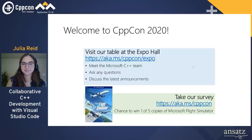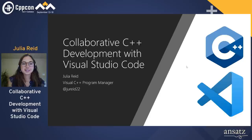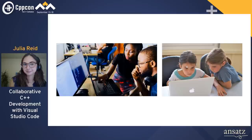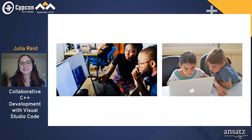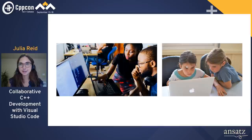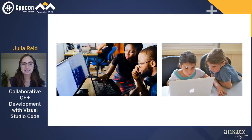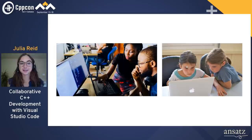My name is Julia. I'm a program manager on the Visual C++ team at Microsoft, and I'm really excited to talk about collaborative C++ development with Visual Studio Code today. Collaborative development has always been important — whether you're working with a partner on a school project, contributing to the same codebase as a coworker, or contributing to an open source project. But in today's remote world, pair programming has a whole new meaning. You can't just pull a chair up next to your coworker's desk. Now, more than ever, collaborative development relies on being able to easily reproduce issues from one machine to another, making environment differences especially critical.